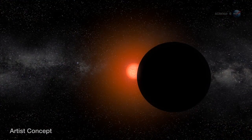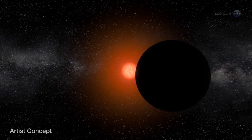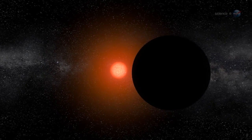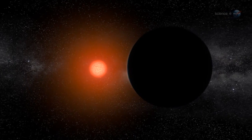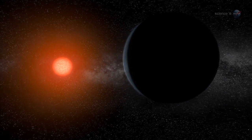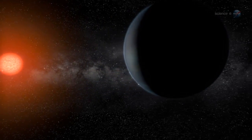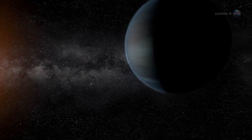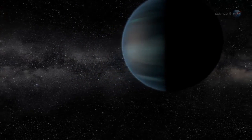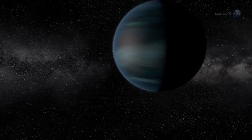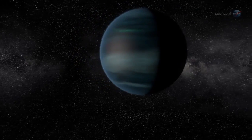The team found another piece of evidence, too. BD plus 48740 has a gas giant planet 1.6 times bigger than Jupiter, which has not yet been devoured. The big planet has a highly elliptical orbit. In fact, it is the most elliptical orbit ever found for a planet around an older star.